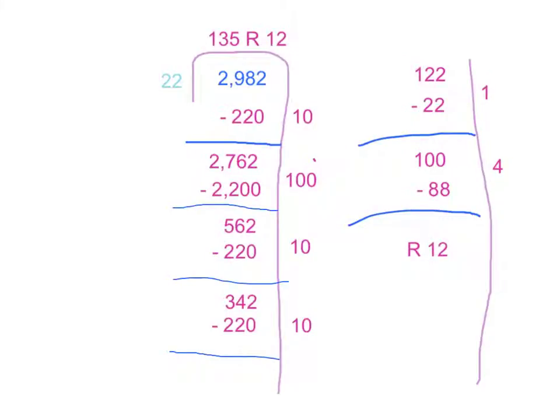The way I did this was every time I took away a number, I wrote how many 22s were in that number on the side. Then I added them up, but I also had a remainder because no more 22s could fit in the number.